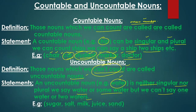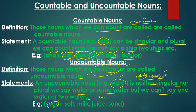In uncountable nouns, keep in mind there are three categories: solid, liquid, and gas — the three states of matter are uncountable nouns. For solids, examples include sugar, salt, and sand — these we cannot count. Air is also a substance we cannot count.